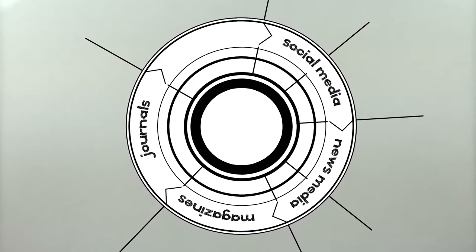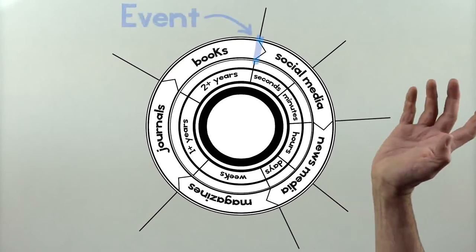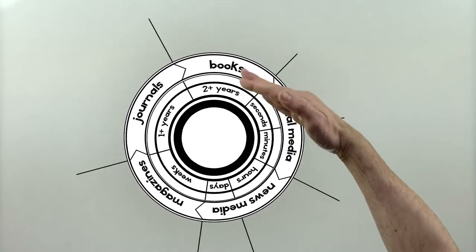We call this phenomenon the information cycle, and it starts with an event, like the release of a popular television show.